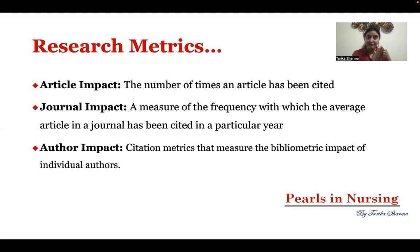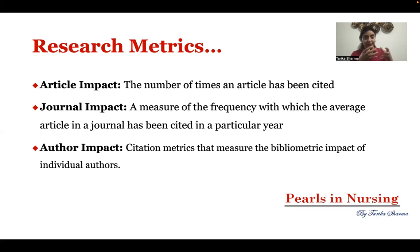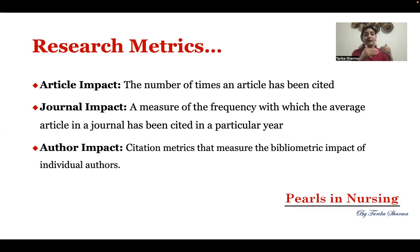Article impact means how many times an article has been cited. Suppose you have written an article which has got a citation of 5, 10, or 15 — it means it is of good quality, that researchers are reading your article and citing your paper. As the number of citations for any paper increases, it means that article has more impact.